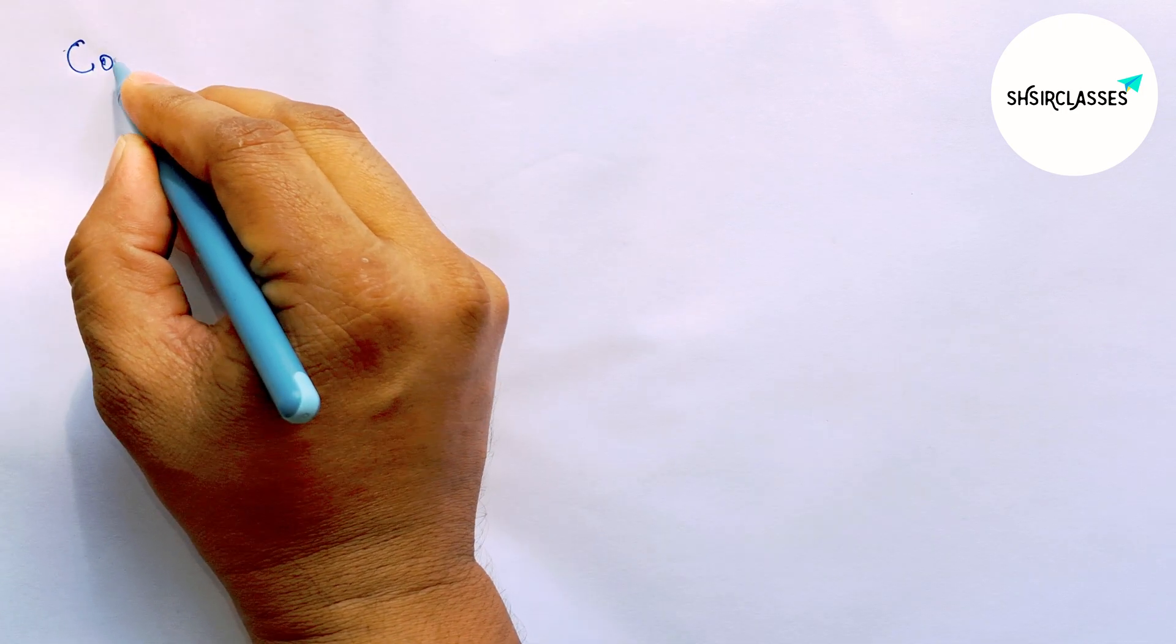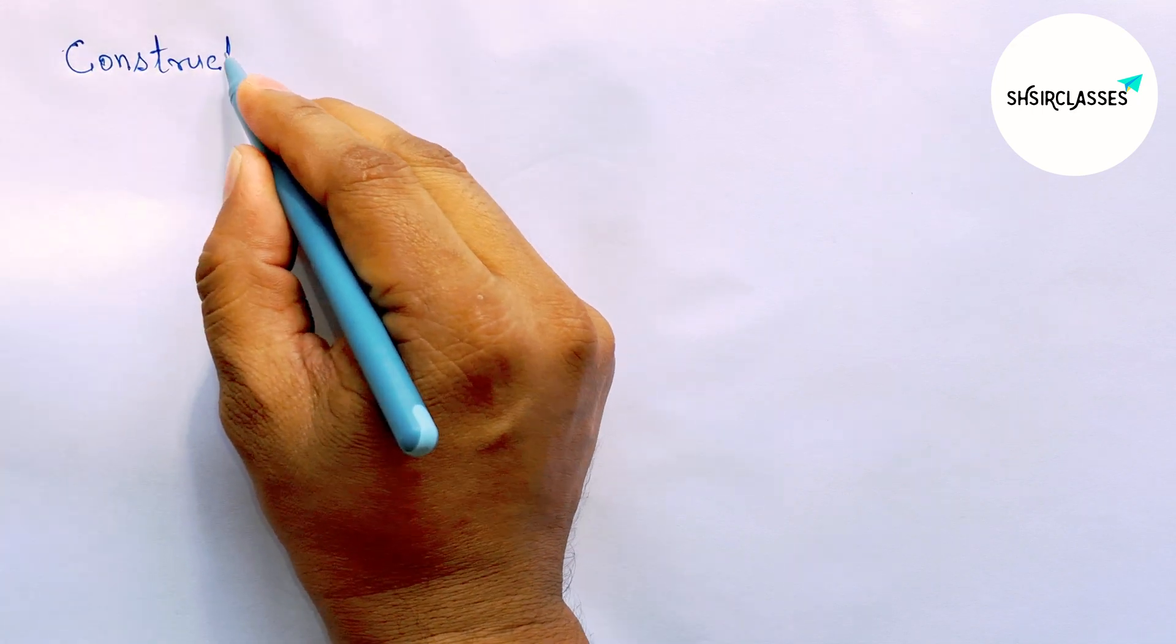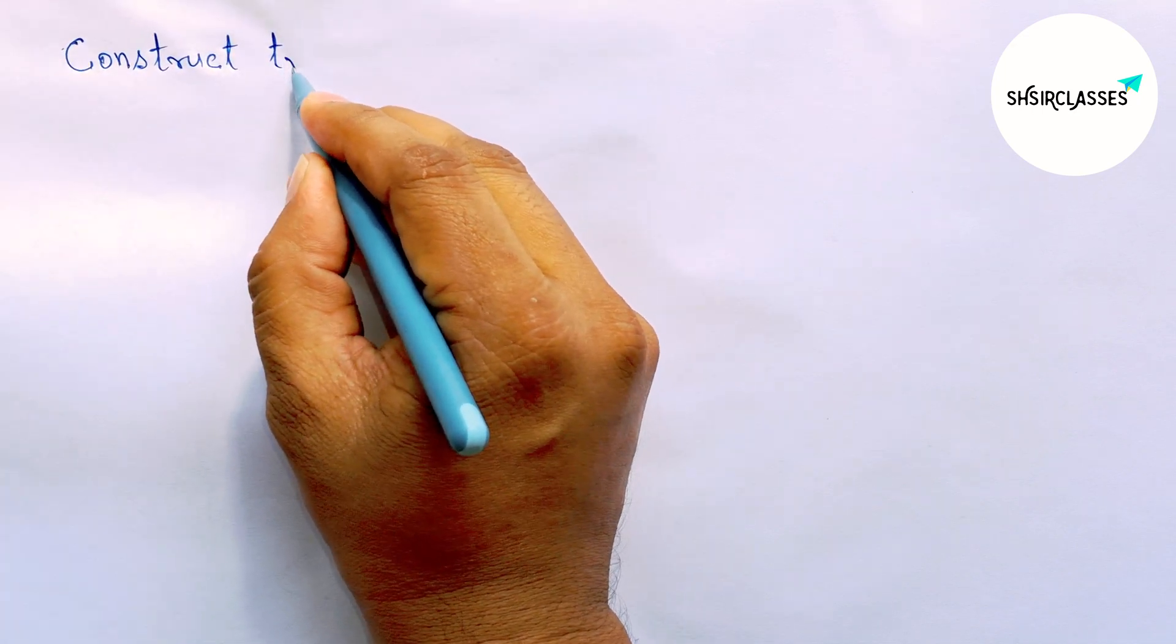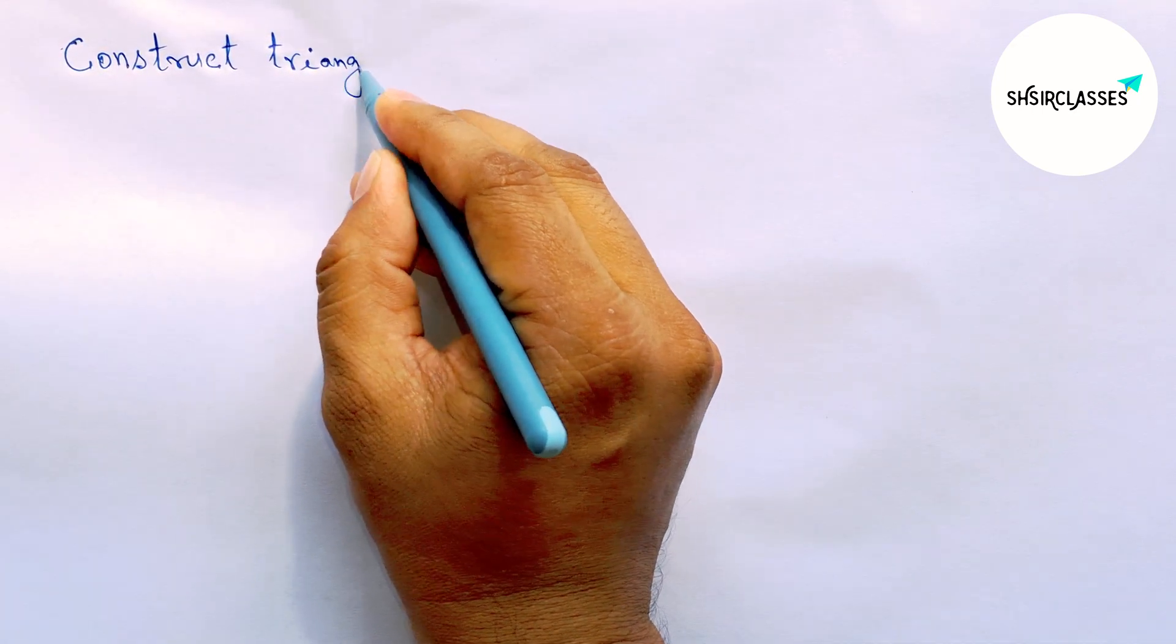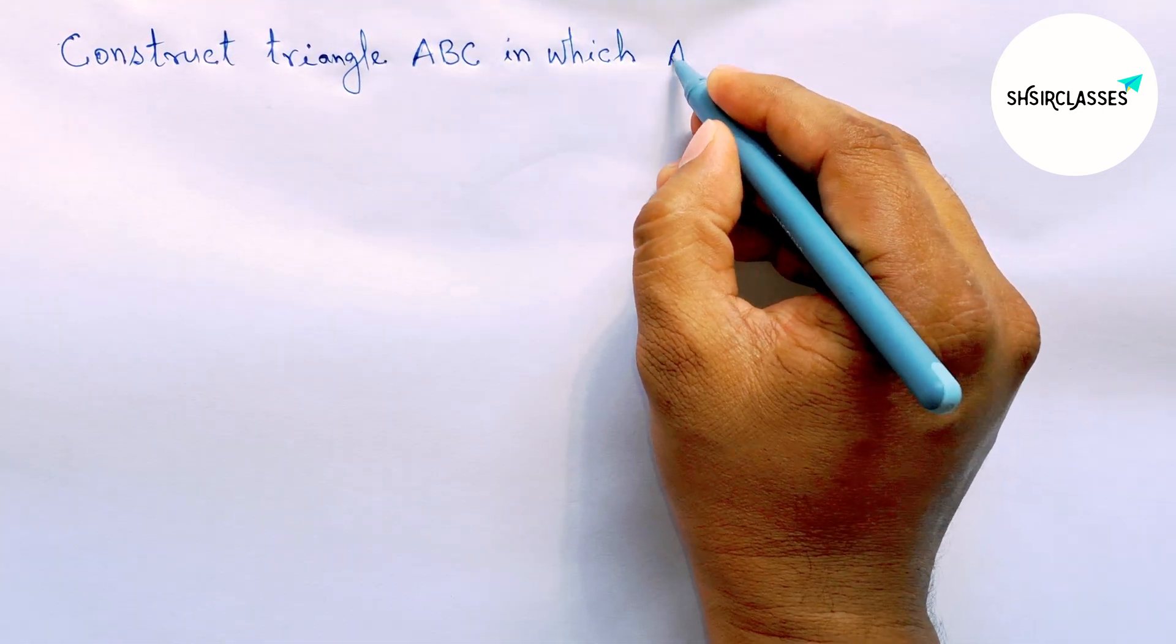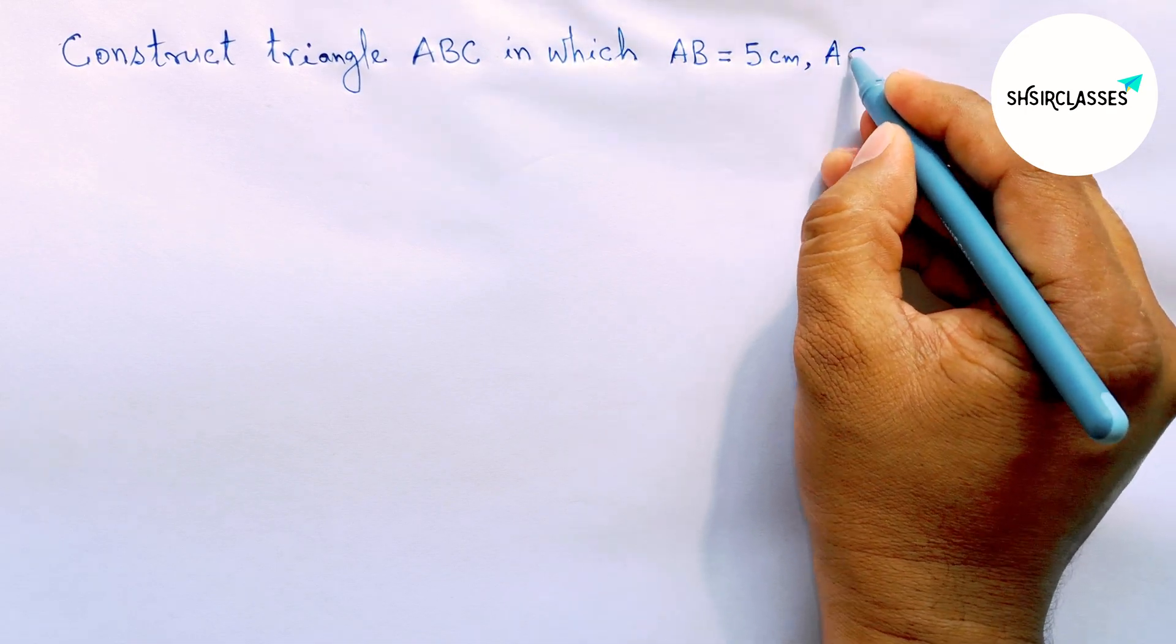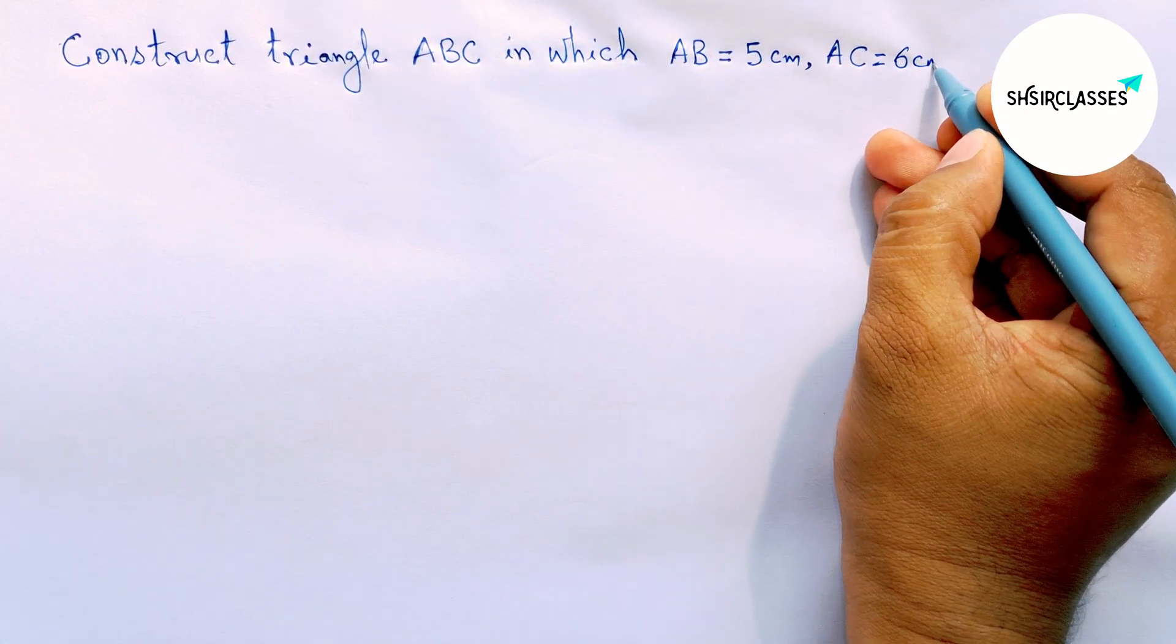Hi everyone, welcome to Say Share Classes. Today in this video, construct triangle ABC in which AB equals 5 centimeter, AC equals 6 centimeter, and BC equals 9 centimeter in easy way. So please watch the video till the end.